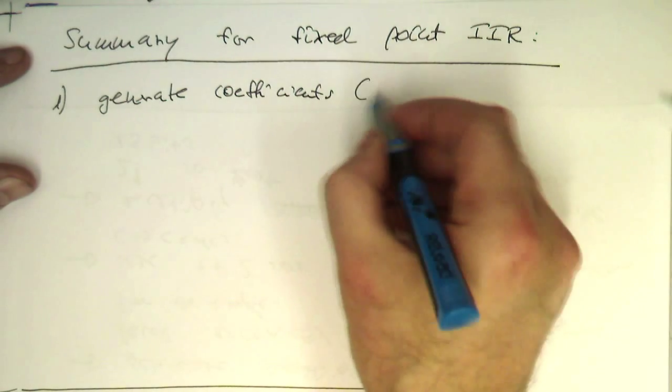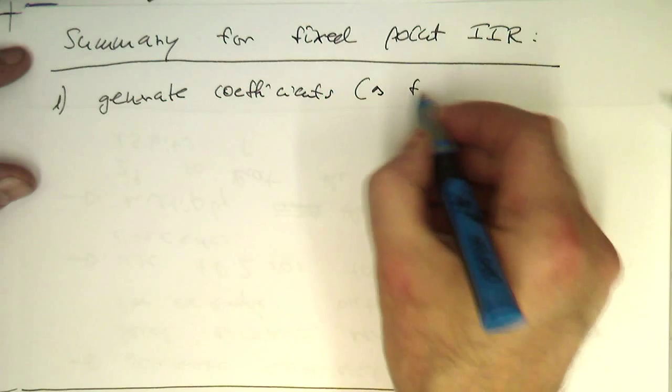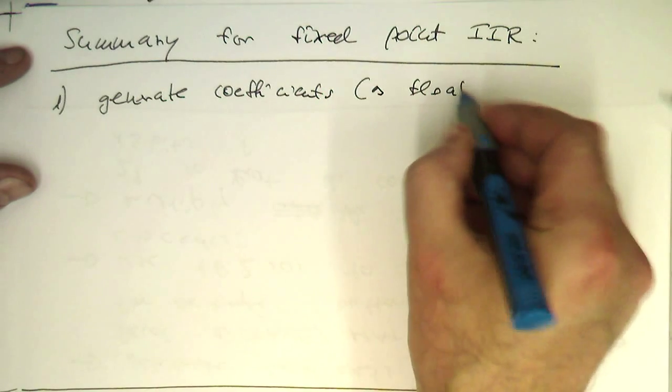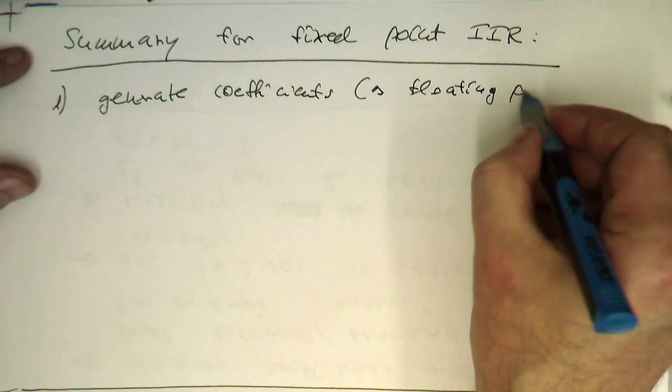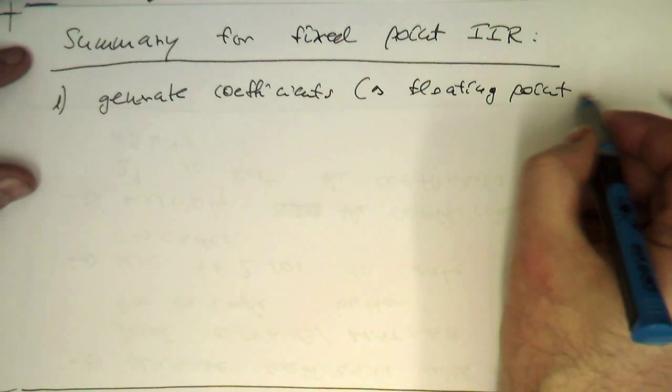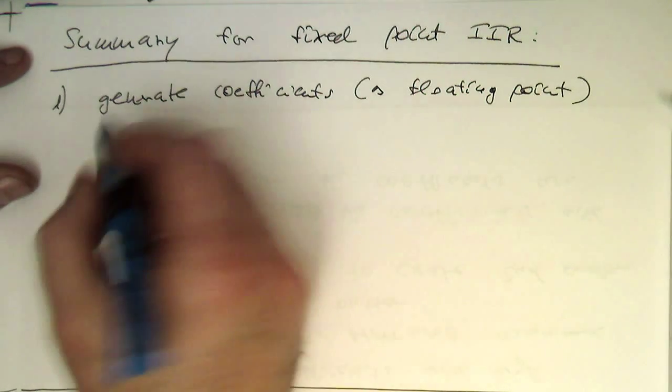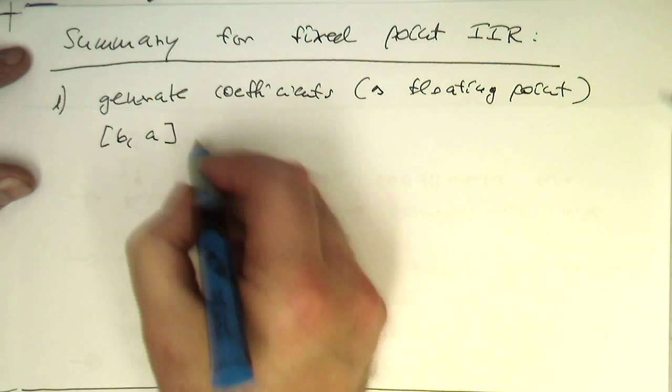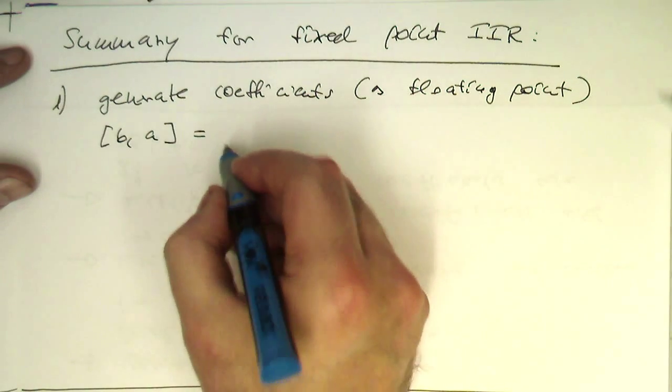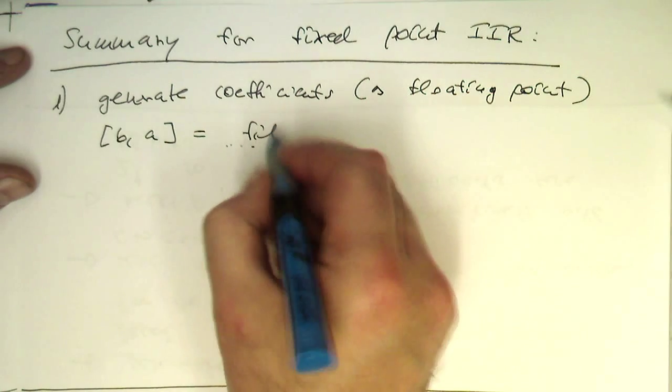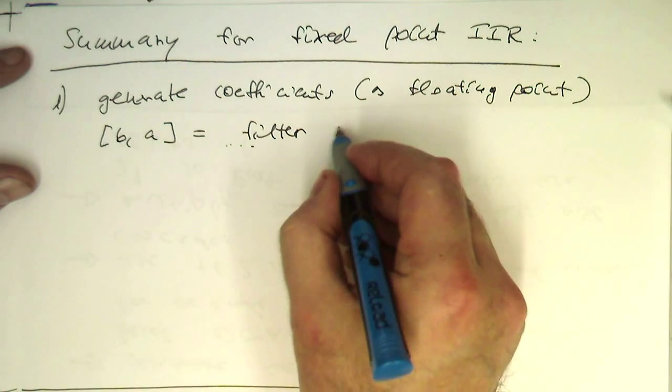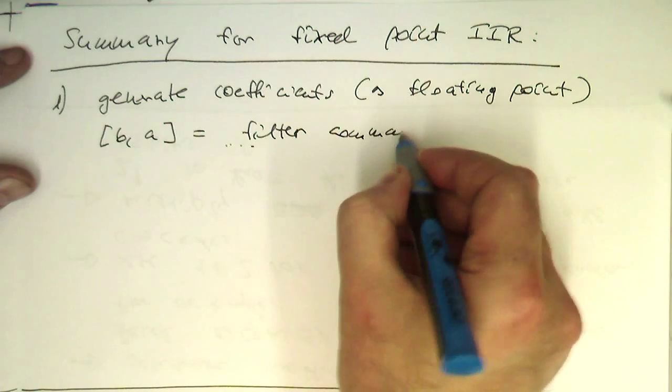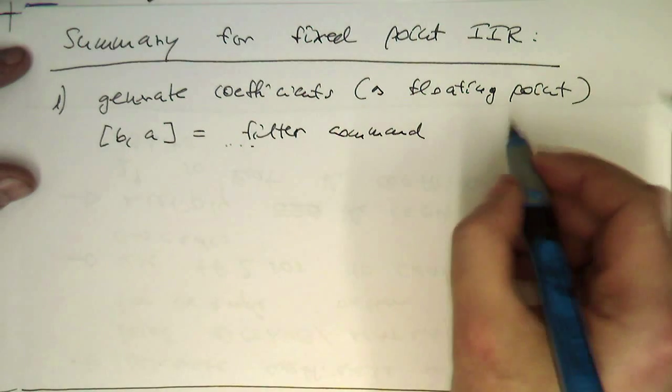Now as floating point. Generate coefficients as floating point as B comma A and then filter command, filter command.